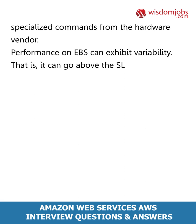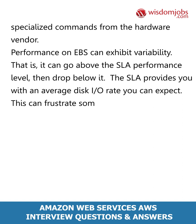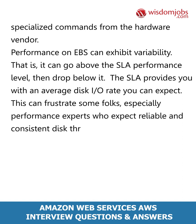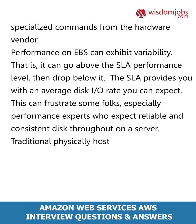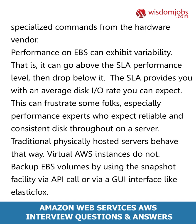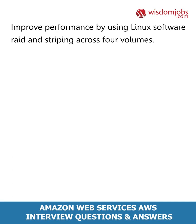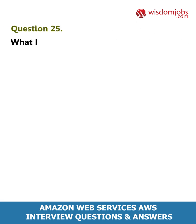Performance on EBS can exhibit variability — it can go above the SLA performance level then drop below it. The SLA provides you with an average disk I/O rate you can expect. This can frustrate performance experts who expect reliable and consistent disk throughput on a server, as traditional physically hosted servers behave that way but virtual AWS instances do not. Back up EBS volumes by using the snapshot facility via API call or via a GUI like ElasticFox. Improve performance by using Linux software RAID and striping across four volumes.